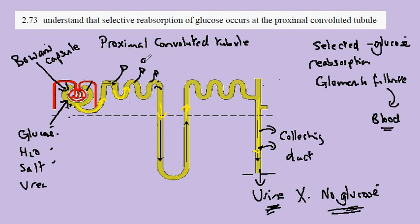So we have glucose here. It's removed and taken back into the blood. Glucose is selectively reabsorbed into the blood in the proximal convoluted tubule, so there is no glucose in urine.